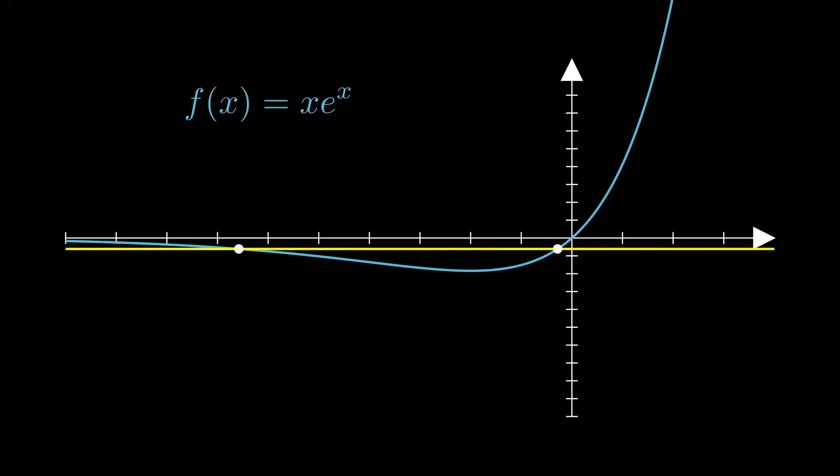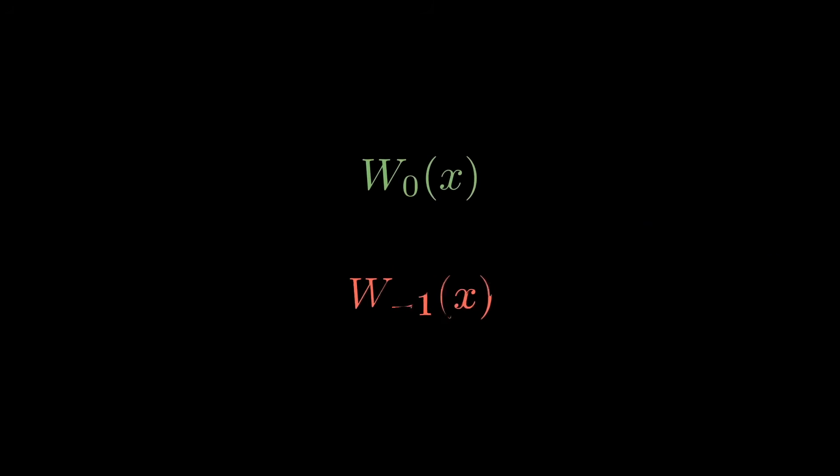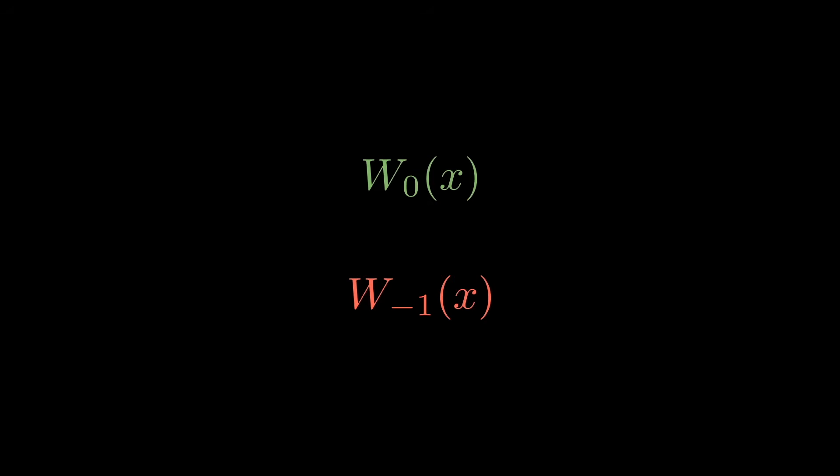And because of this, the Lambert function is really multi-valued, having multiple branches depending on the values we're looking at. For real numbers, we really only need two branches, which are denoted like this.